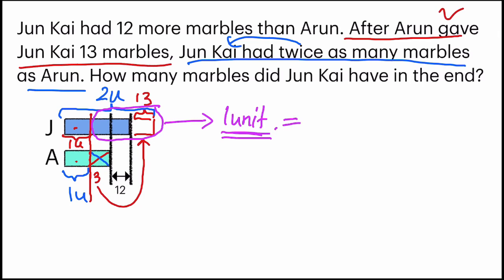So this one unit — I can find out how many marbles there are. This part I know how many there are, because it's 13: the marbles that Arun gave to Jinkai. Then this part is 12. And I have another part which Jinkai received from Arun, which is 13. So the total will become 1, 2, 3 — 38.